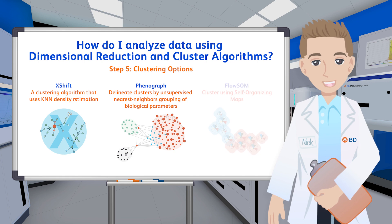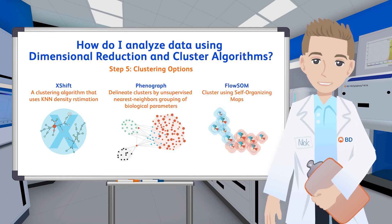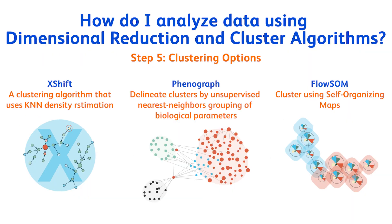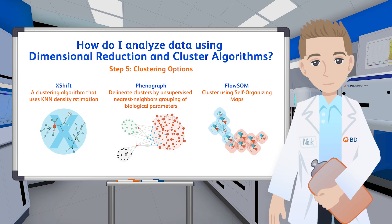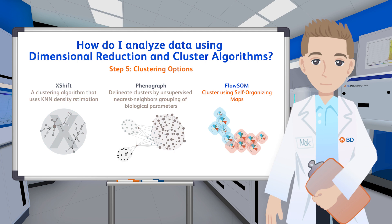Dimensional reduction and clustering go hand-in-hand — one is not incredibly useful without the other. We use clustering algorithms for two reasons: first, to parse the data faster, as the algorithm will identify all populations present in the dataset normally within minutes versus the 17 hours mentioned earlier; or second, to get a fresh perspective on the data. All algorithms have their pros and cons, but the most used in the field currently is FlowSOM. FlowSOM uses a self-organizing map and k-nearest neighbors to generate cluster populations.